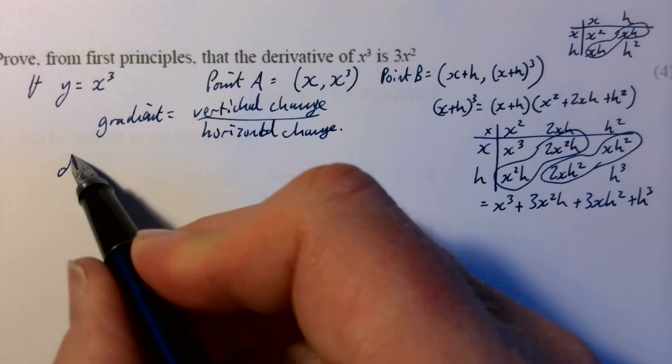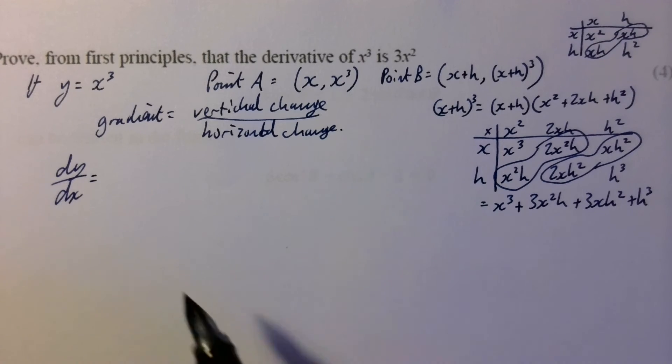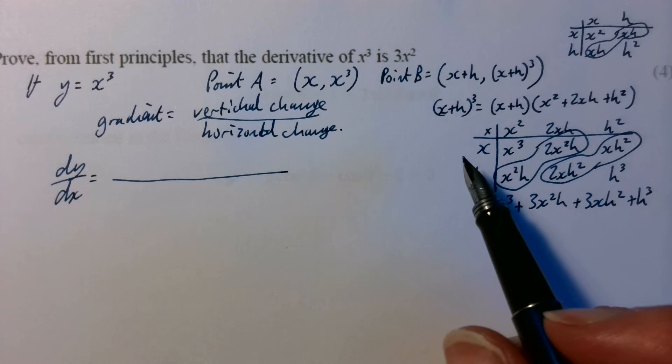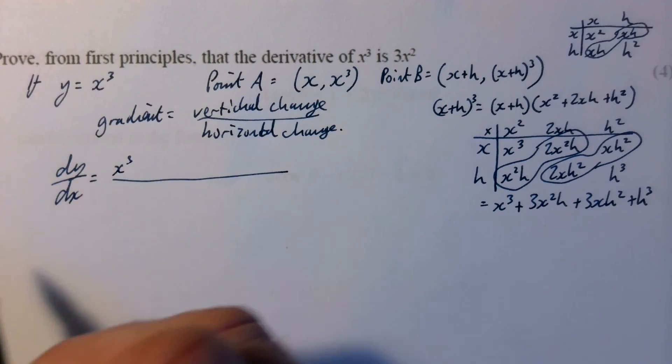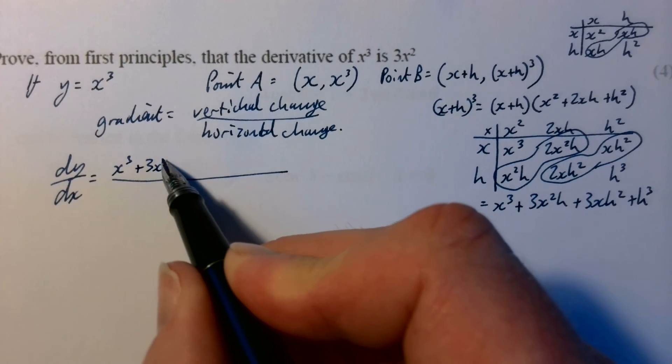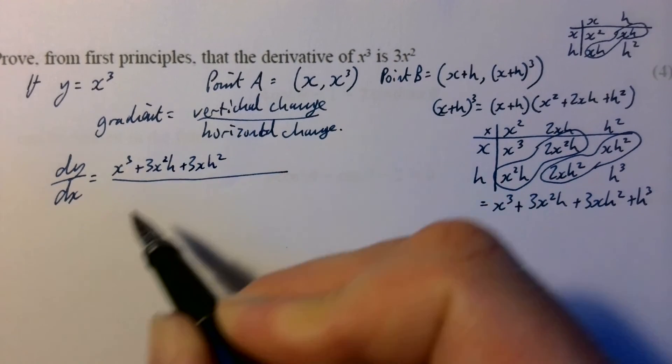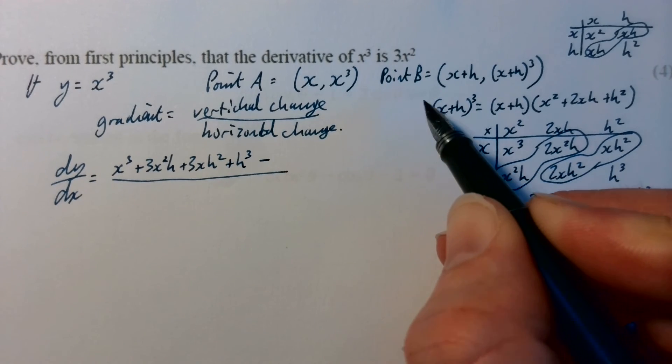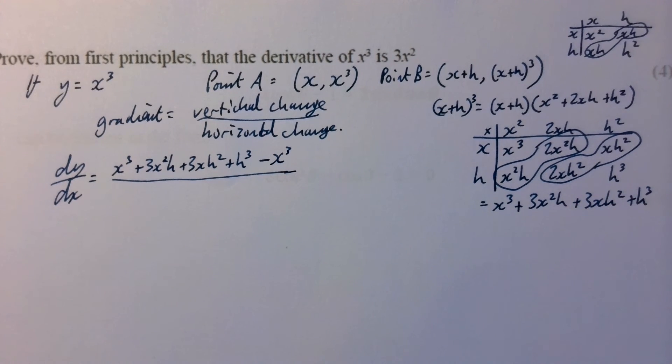You just need to write that dy/dx is going to be, well, when we do our vertical change, we take one coordinate from the other, don't we? So we're going to have x plus h cubed, which is x cubed plus 3x squared h plus 3xh squared plus h cubed, and we're taking from that the y coordinate, which is x cubed.